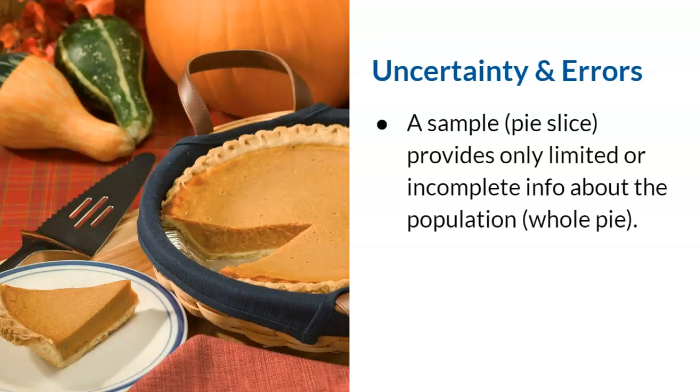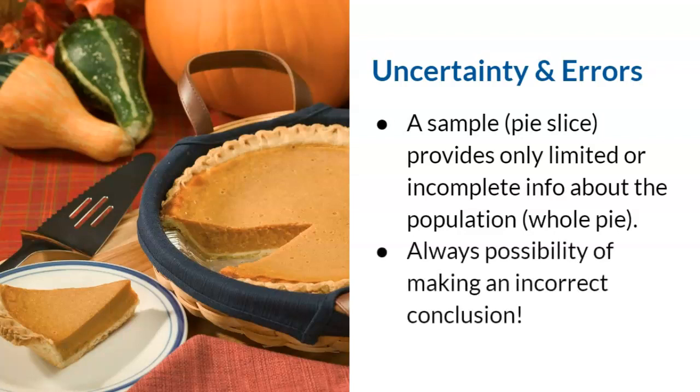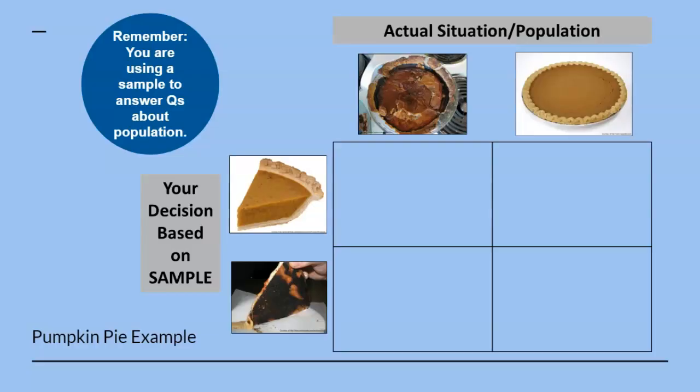Now in reality, the sample, or a pie slice, provides only limited or incomplete information about the population, or the whole pie. Therefore, we honestly always have a possibility of making an incorrect conclusion, or making an error in step four of hypothesis testing. This diagram uses the analogy of pumpkin pie to explain the possible outcomes in hypothesis testing. Remember, you're using a sample to answer questions about the population. The left side of the diagram is the decision that you make based on the slice of pie, and the top reflects the reality of the situation. There are four possible outcomes.